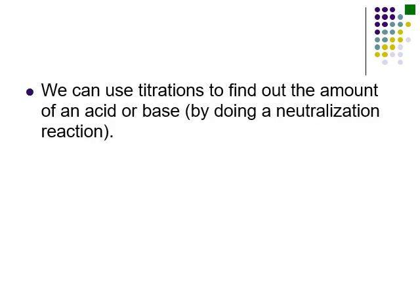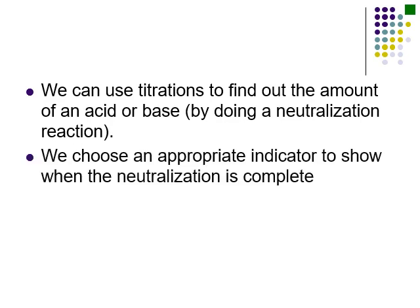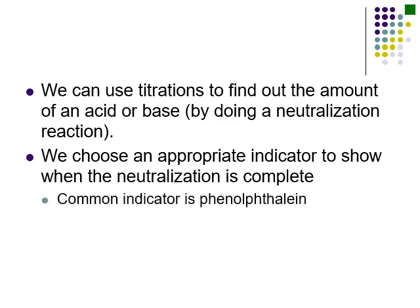One of the main uses of a titration is to find the unknown amount of an acid or base. We do this by performing a neutralization reaction. The most common and simplest approach is to use an indicator to show when the neutralization is complete. The most common indicator in most situations is phenolphthalein, used for strong acid/strong base and weak acid/strong base titrations. It tends to be our go-to indicator.